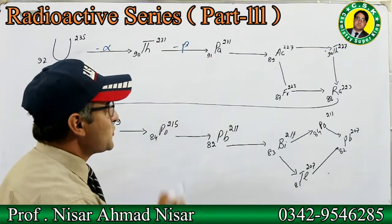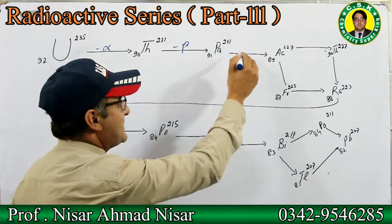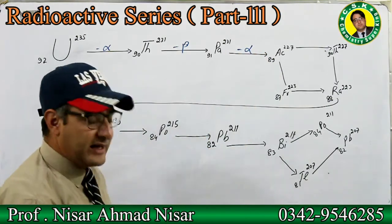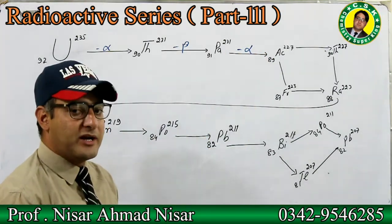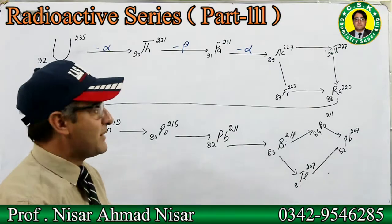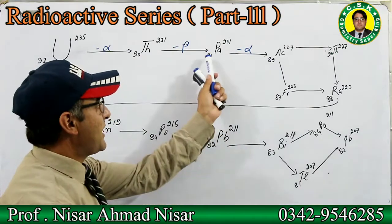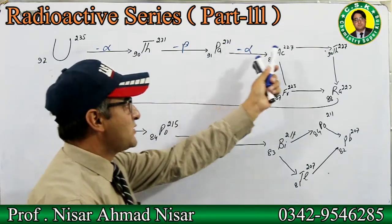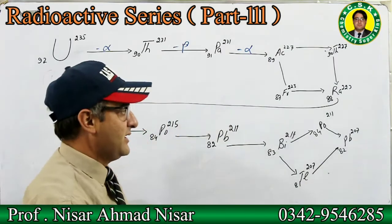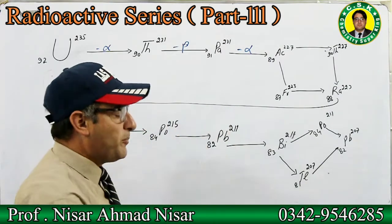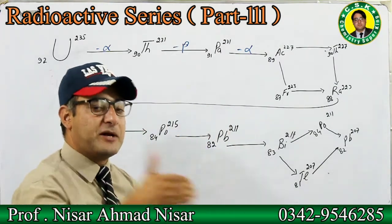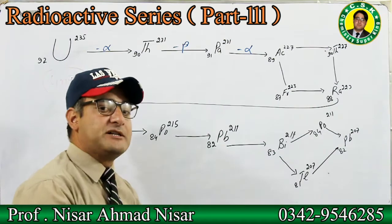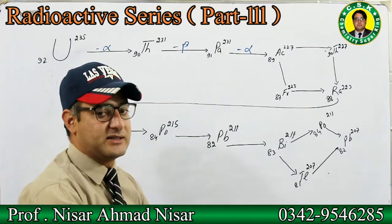From thorium-90-231, a beta particle is emitted, so atomic number increases by 1 to give 91, mass number stays at 231 — that is protactinium-91-231. This is an isobar. Then an alpha particle is emitted: atomic number decreases by 2 to 89, mass number decreases by 4 to 227 — that is actinium-89-227.